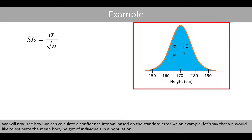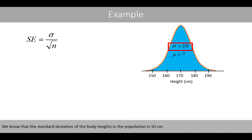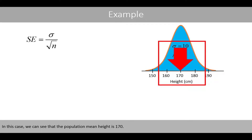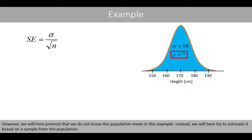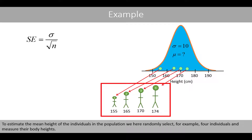As an example, let's say that we would like to estimate the mean body height of individuals in the population. We know that the standard deviation of the body height in the population is 10 centimeters. In this case, we can see that the population mean height is 170. However, we will here pretend that we do not know the population mean in this example. Instead, we will try to estimate it based on a sample from the population. To estimate the mean height of the individuals in the population, we here randomly select, for example, four individuals and measure their body heights.